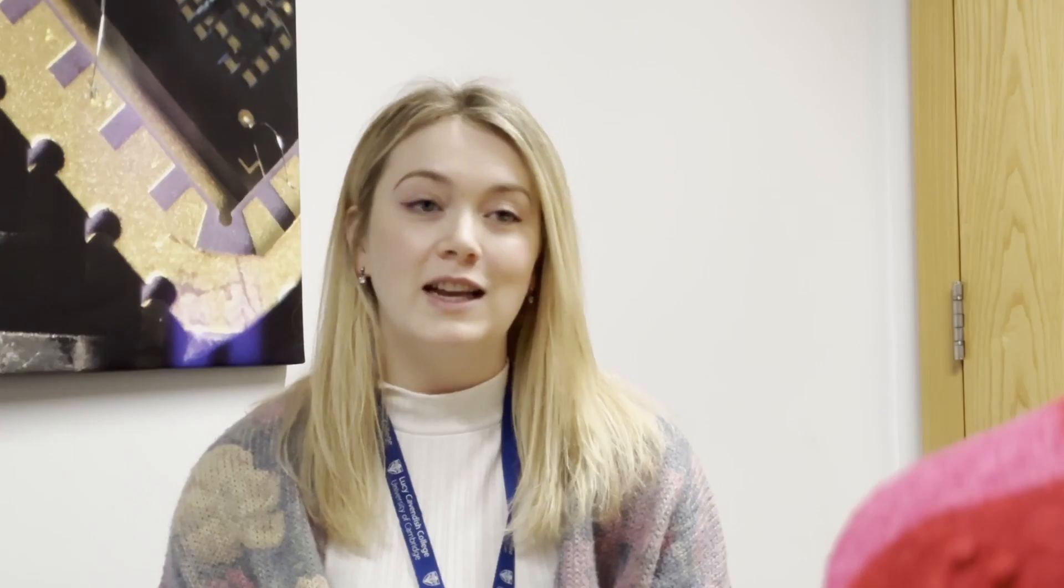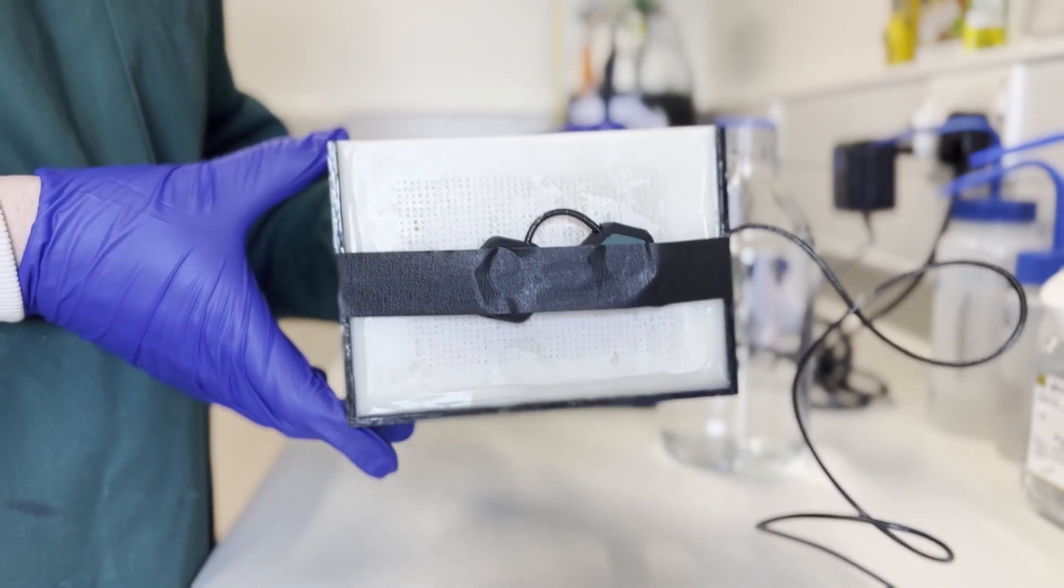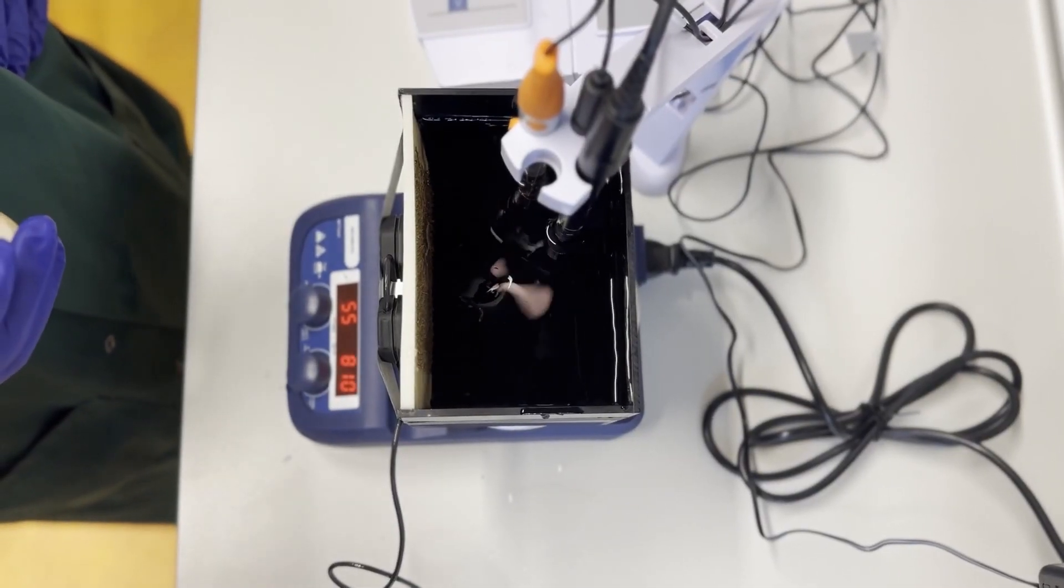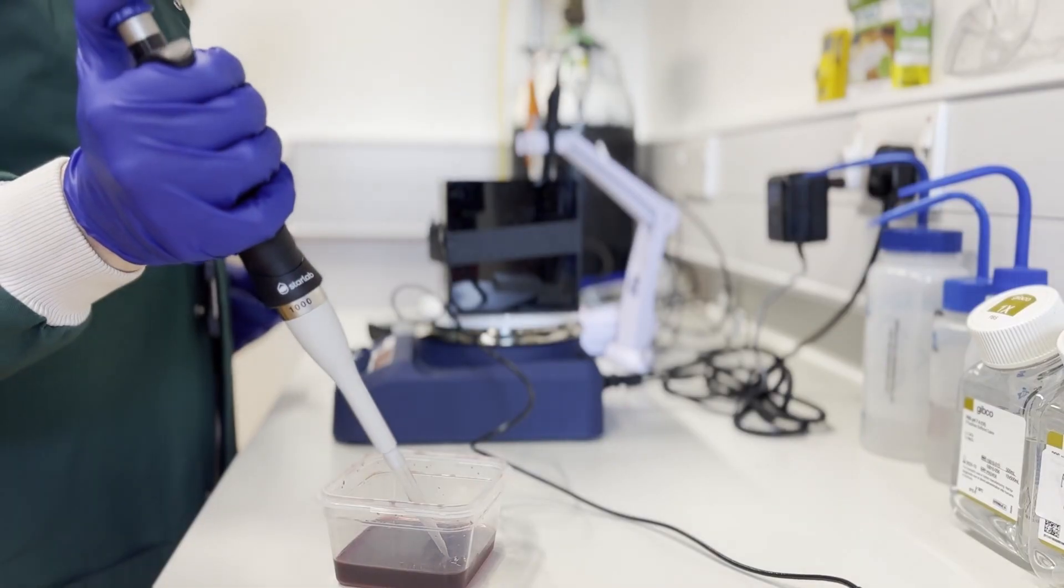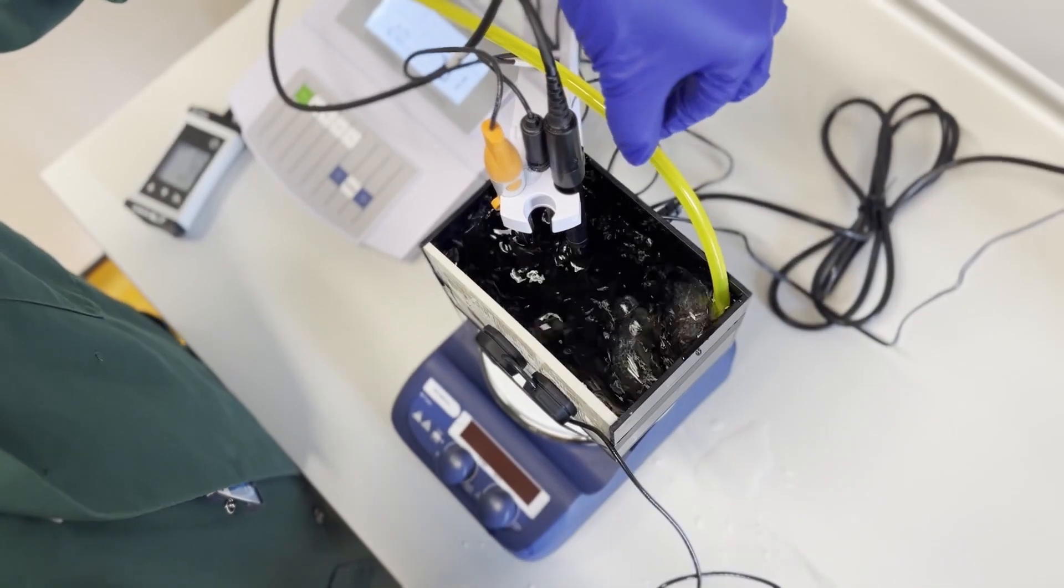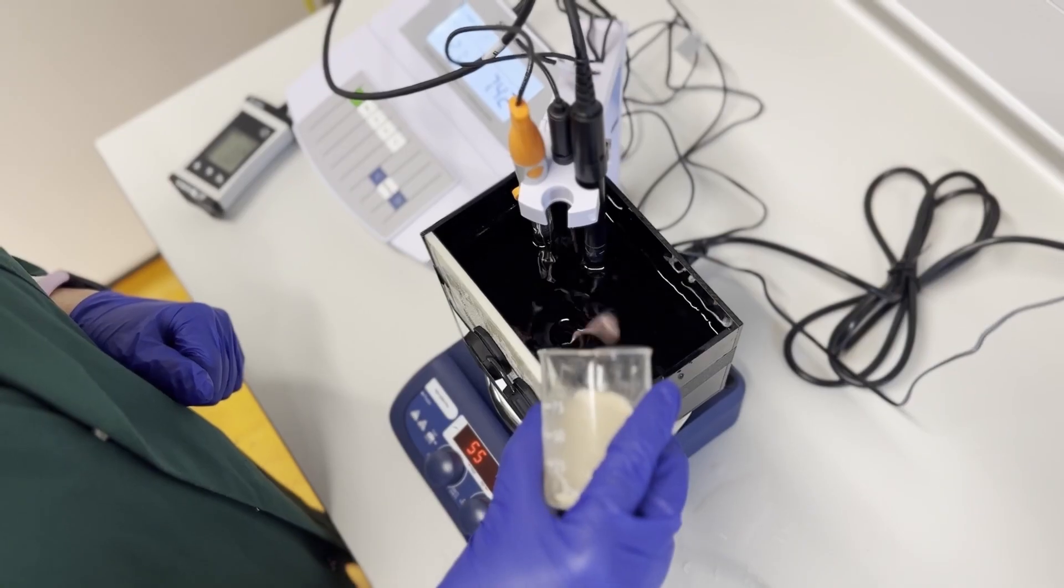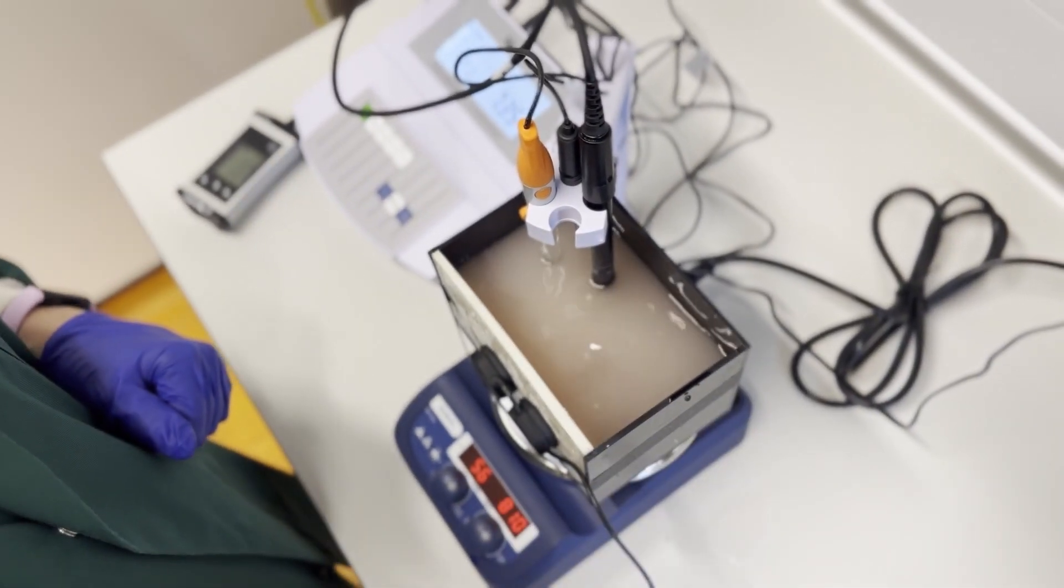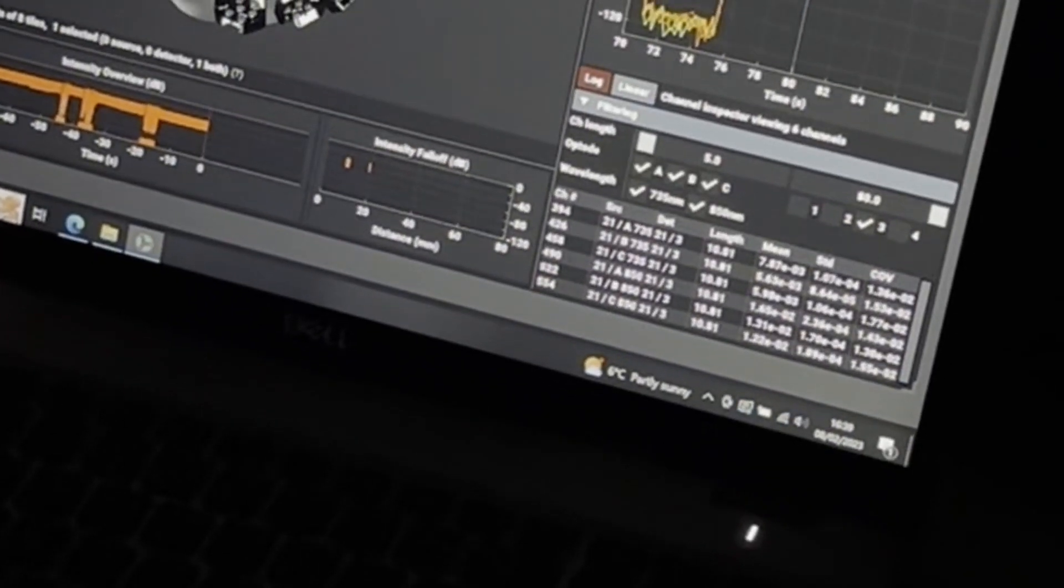These are the sensors I put on the face of my phantom—a phantom is essentially a fake brain. It consists of a box with the same optical properties as the scalp and skull, which I fill with a mixture of fat, water, and animal blood. I use oxygen gas to fully oxygenate the mixture, then add baker's yeast. This rapidly deoxygenates the mixture, simulating a stroke in my phantom, so I can see if my system picks up that rate of decline in metabolism.